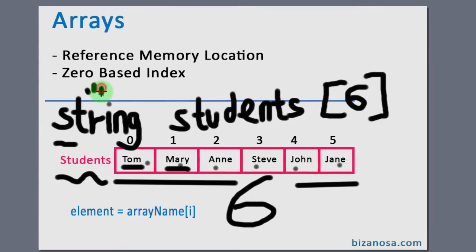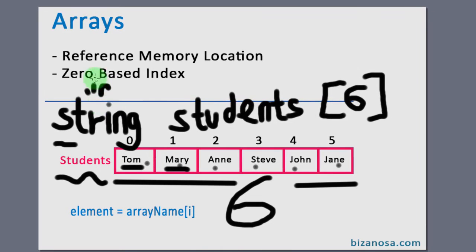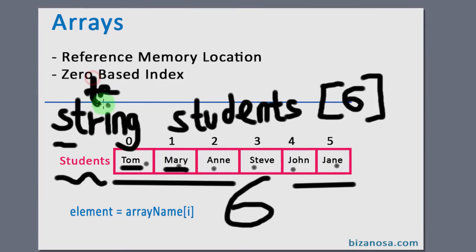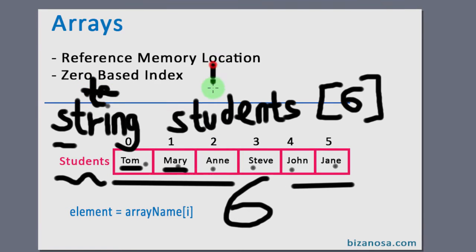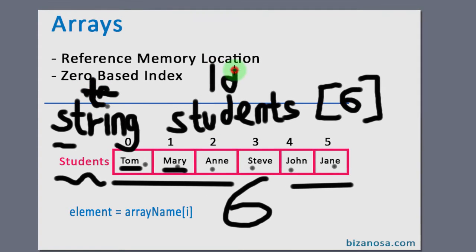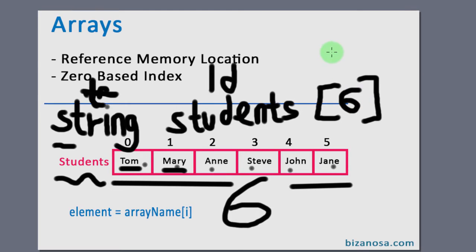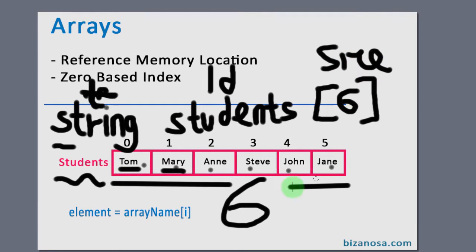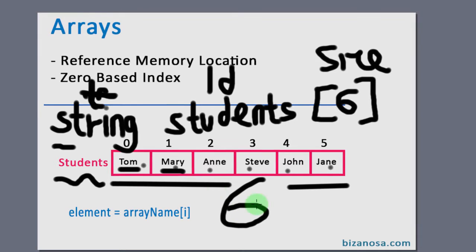you declare this array as a string. So here we have the type of the array, and then the id of the array, and then the size of the array. So our size, our array has six elements.